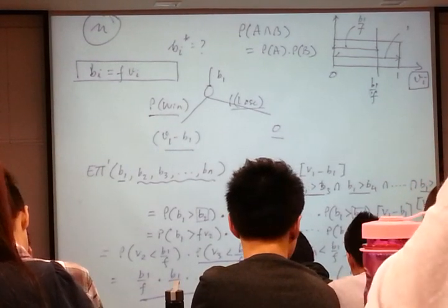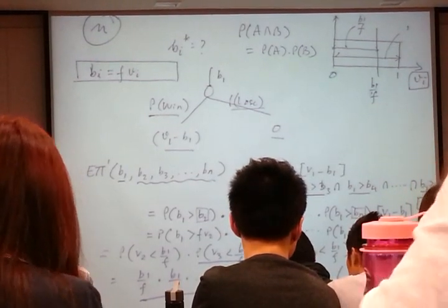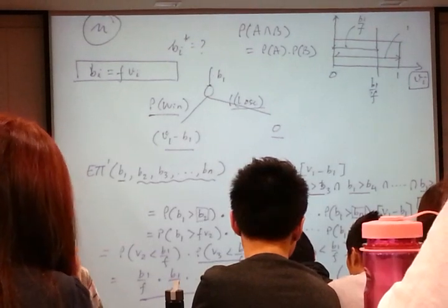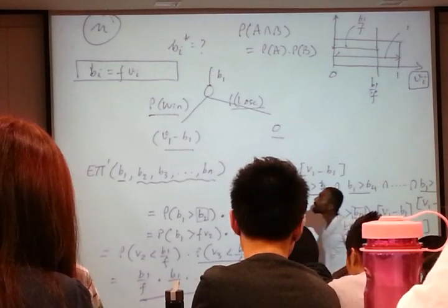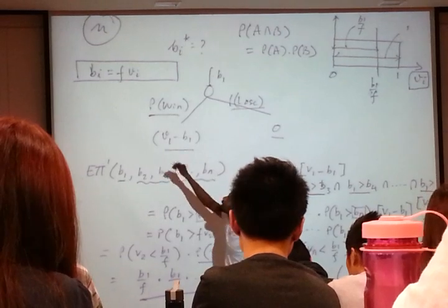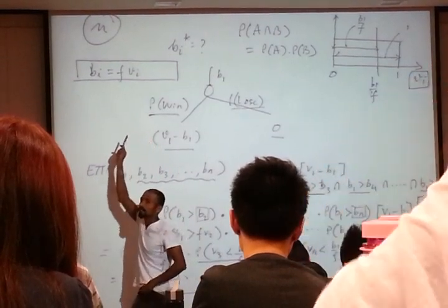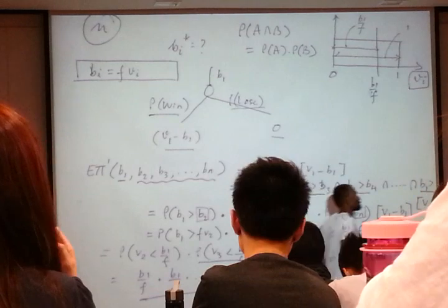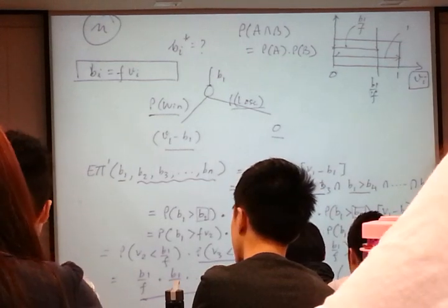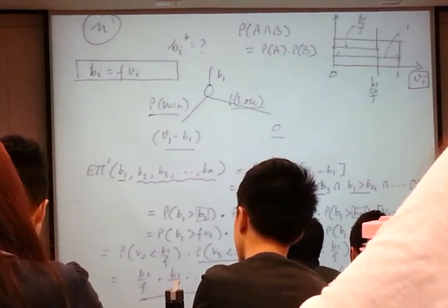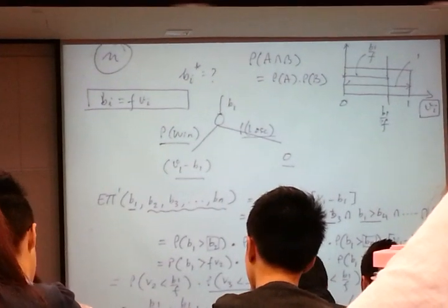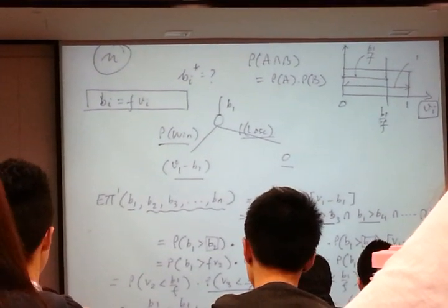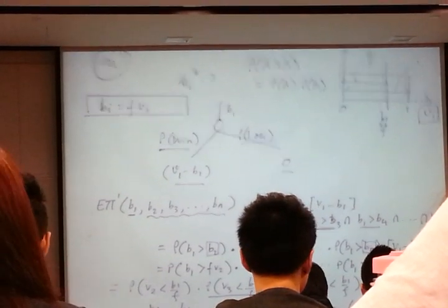This is the expected payoff, ladies and gentlemen, to any bidder, in our case bidder 1, of bidding B1 when other bidders are using a linear bidding strategy, bidding a fraction of their valuation. What's my next step? My next step is to differentiate this expected payoff function with respect to B1, set it equal to 0, and solve for B1 star. We do that.